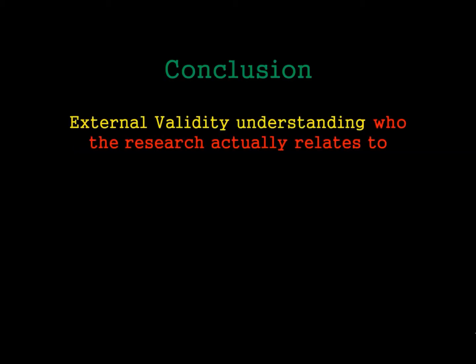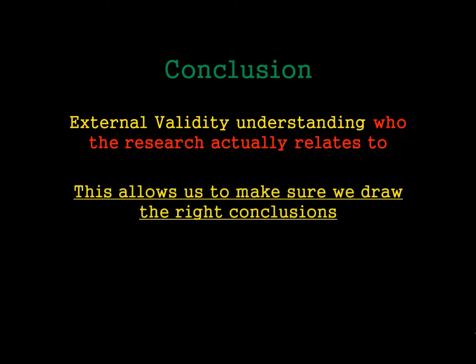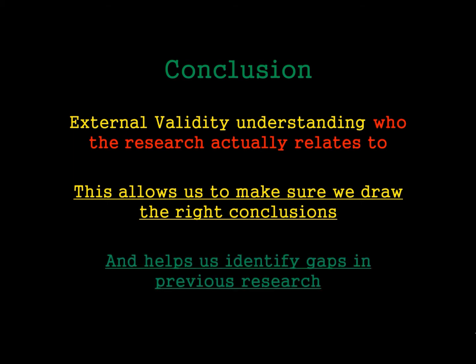In conclusion, external validity is really about understanding how our study relates to the real world, or who the research actually relates to. This allows us to make sure we draw the right conclusions. You do see studies that use elite athletes and then apply those results and conclusions to the real world — but external validity tells us they don't apply; they only apply to the conditions and people used. This is also a great way of identifying gaps. If research has done lots of studies on elite athletes and nothing on normal people, then obviously there's a gap we can use to create our own research study.